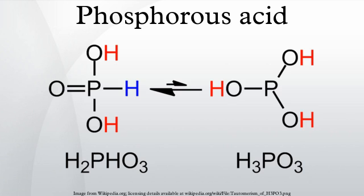Phosphorus acid is the compound described by the formula H3PO3. This acid is diprotic, not triprotic as might be suggested by this formula. Phosphorus acid is an intermediate in the preparation of other phosphorus compounds.